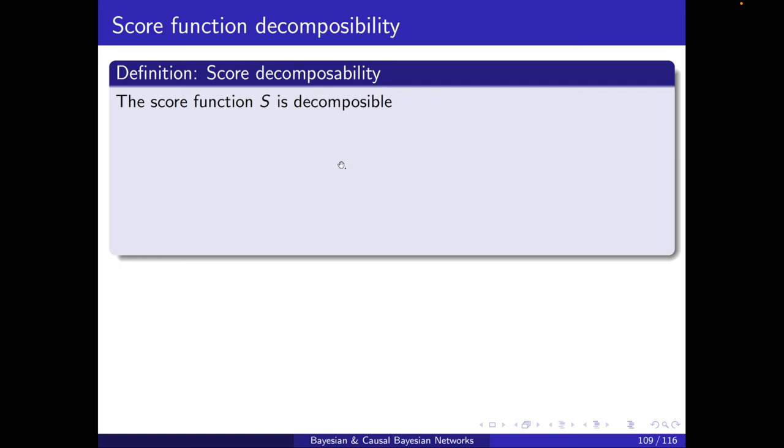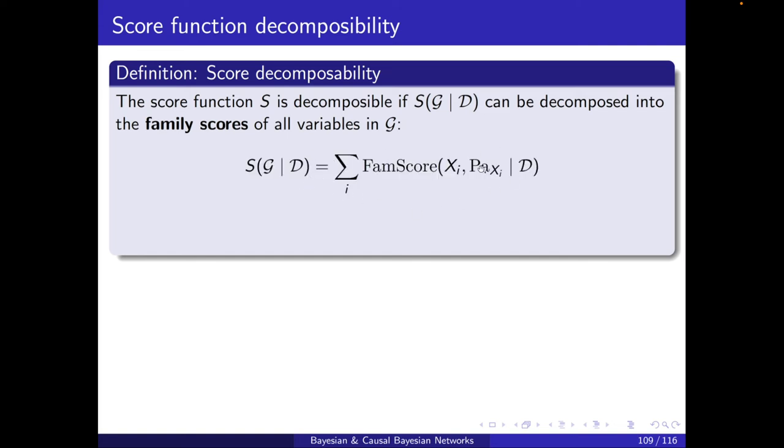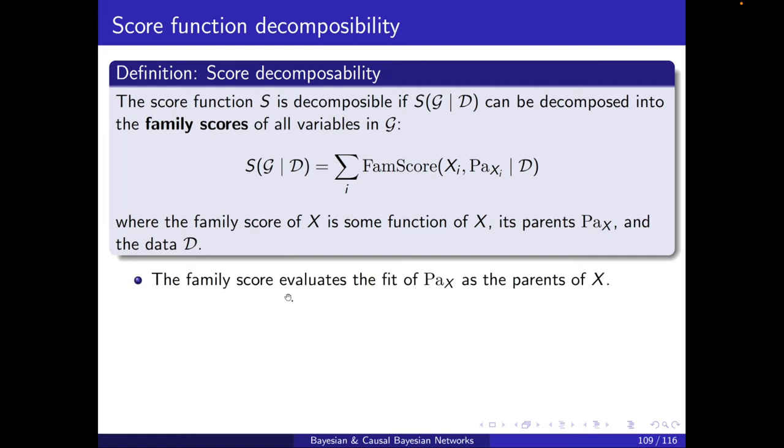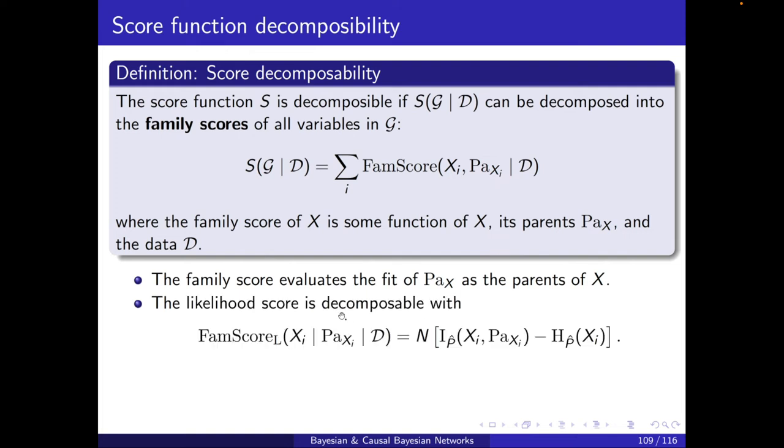The score function S, we call it decomposable, if it can be decomposed into the family scores of all of the variables in this way. Now, what is a family score? The family score of X is some function of X, its parents PA_X, and the data D. So it's essentially evaluating the fit of the parents of X as the parents, of this PA_X as the parents of X. It's quite handy, like it's decomposing the score as a summation of some local scores, XI and the parents of XI. For example, in the likelihood case, the likelihood score is decomposable with this term. We had it written as the summation of XI and the parents of XI as the mutual information and the entropy.